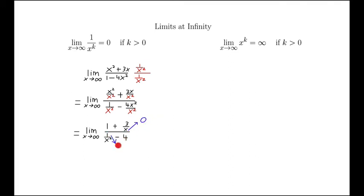And this 1 over x squared is also going to go off to 0, because again, k is greater than 0, and it's 1 over something.